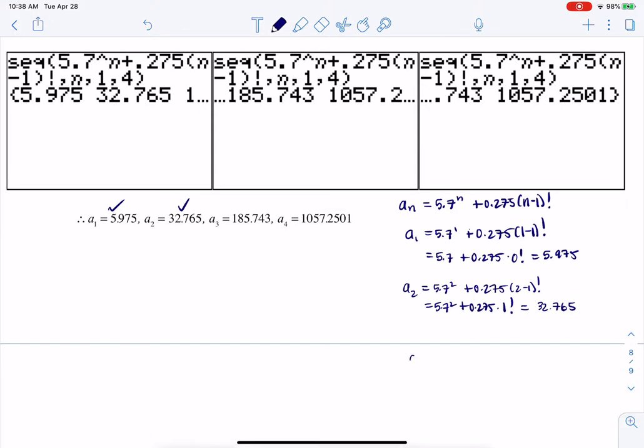If I scroll down a bit, I'll do a sub 3. This is going to be 5.7 cubed plus 0.275 and I can start to see the pattern now, right? I had 0 factorial then 1 factorial. So this is going to be times 2 factorial if I continue that pattern.